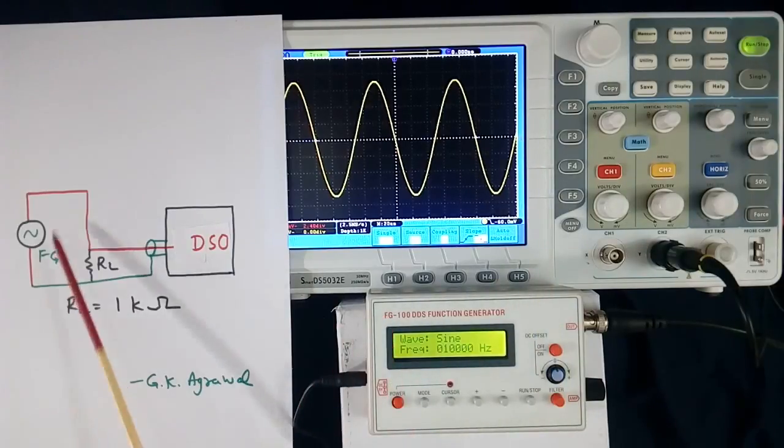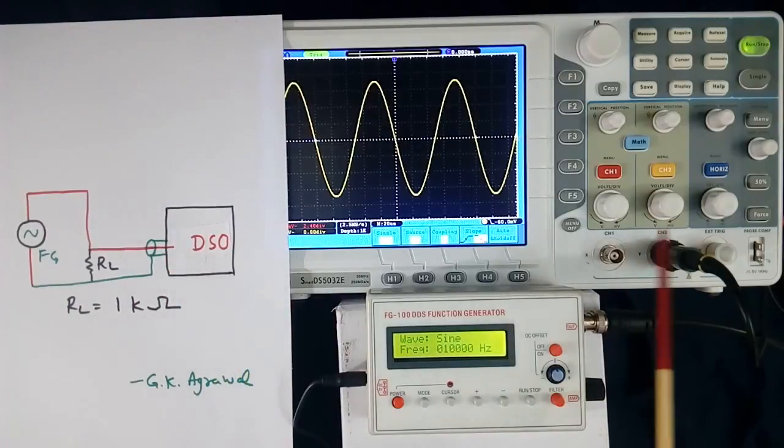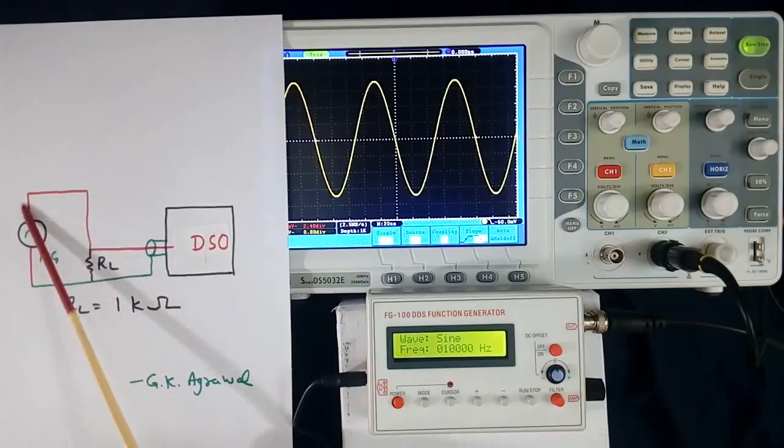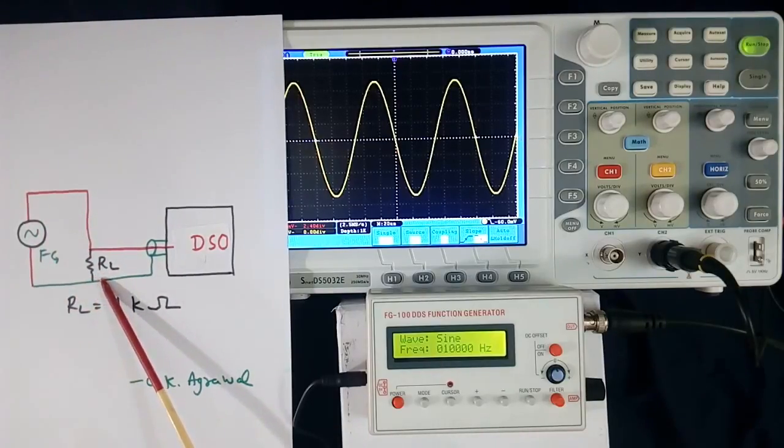This function generator I have shown here. This output is connected to DSO channel 2. And I have connected 1 kOhm load across function generator output. Why? I will tell later.